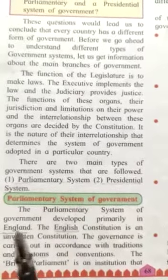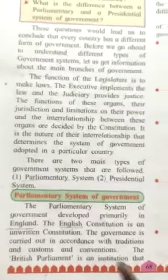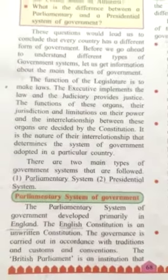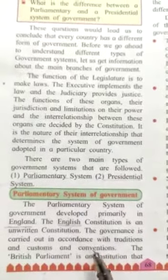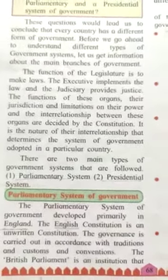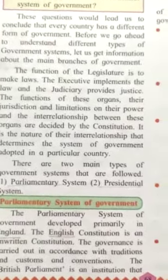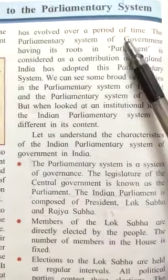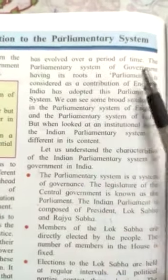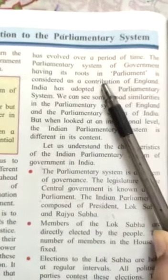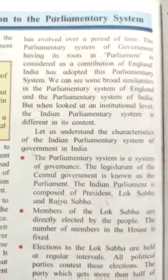The parliamentary system of government developed primarily in England. The English constitution is an unwritten constitution — governance is carried out in accordance with traditions, customs, and conventions. The British parliament is an institution that has evolved over a period of time. The parliamentary system, having its roots in parliament, is considered a contribution of England.